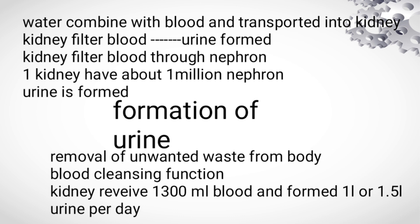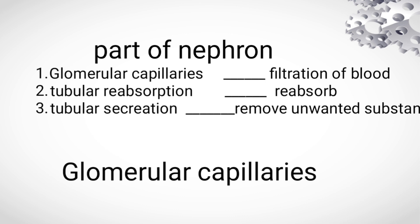Now we will see how urine is formed. The kidney processes urine formation through three parts: glomerular capillaries, tubular reabsorption, and tubular secretion. Glomerular capillaries perform filtration of blood; tubular reabsorption reabsorbs nutrients; and tubular secretion removes unwanted substances.